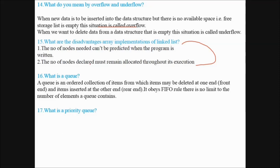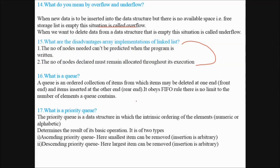What is a priority queue? The priority queue is a data structure in which the intrinsic ordering of the elements, numeric or alphabetic, is determining the result of its basic operation. It is of two types: ascending priority queue, where smallest item can be removed and insertion is arbitrary, and descending priority queue, where largest items can be removed.